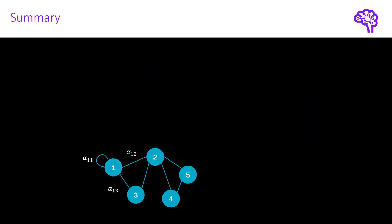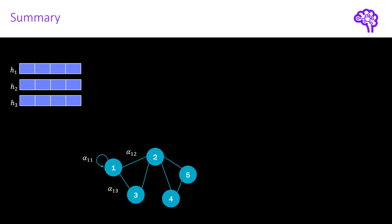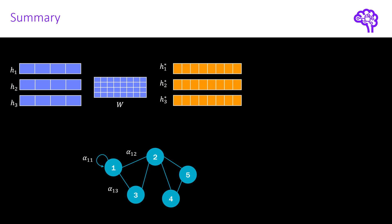So to finish this video, I wanted to show a final summary of the attention mechanism for one node. Here it's node 1. We collect the neighbor nodes and the node feature vector of node 1 and pass everything through a learnable linear transformation. This means we multiply with W.